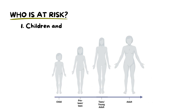Children and adolescents are primarily affected by fibrous dysplasia. The root cause of this condition is a mutation that transpires early during fetal development, leading its signs to often become evident during these growing years. Females tend to show a higher incidence of fibrous dysplasia.